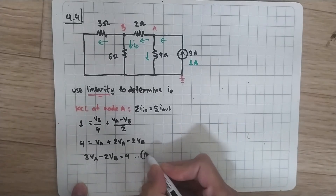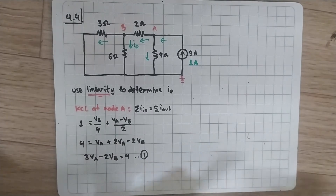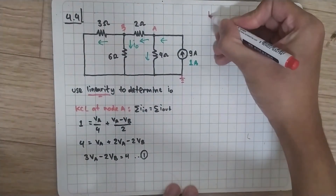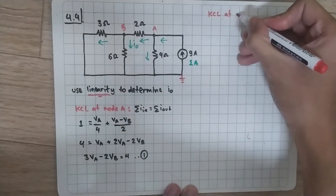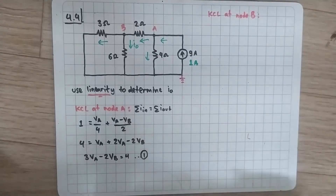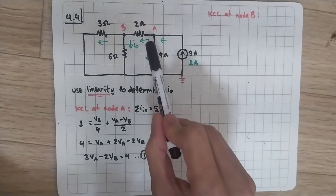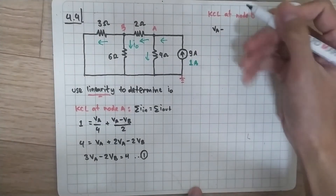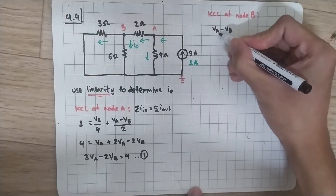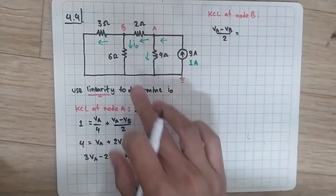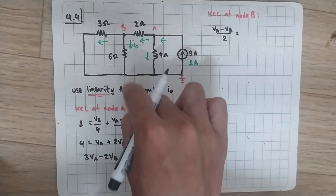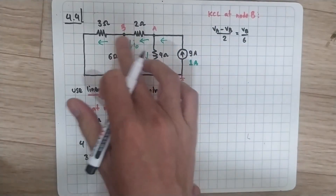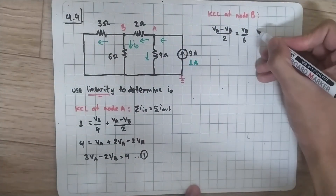Now we will use KCL at node B. The current going in is VA minus VB divided by 2. The currents going out are I0, which equals VB over 6, and the other branch which equals VB over 3.